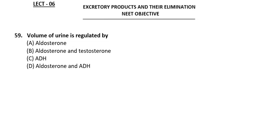Testosterone doesn't play any role in controlling the volume of urine. Aldosterone controls volume of urine, and ADH (vasopressin) also plays a role. Option D gives both aldosterone and ADH, so we take option D — both aldosterone and ADH play a role in regulating the volume of urine.